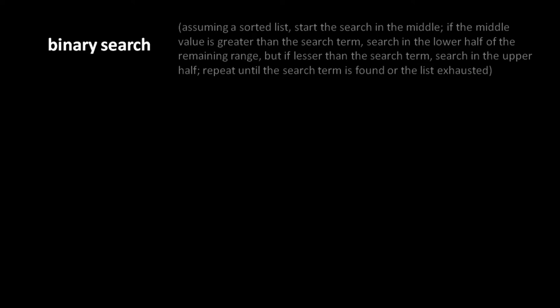The gist of binary search is that we start our search not at the beginning, but actually in the middle. If the value in the middle happens to match what we're searching for, our search is done. Otherwise, if the value there is greater than what we're searching for, we know we need to look to its left. If it is less than the value we're searching for, then we need to search to the right. With our first comparison, we have effectively eliminated a whole half of the list from consideration — we know the value can't be found there.